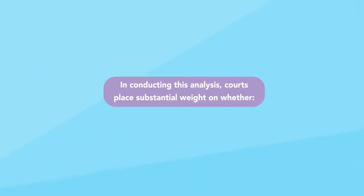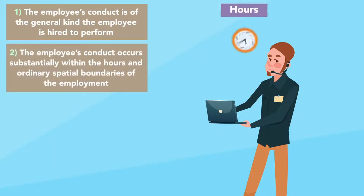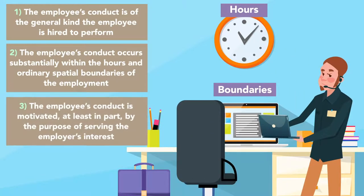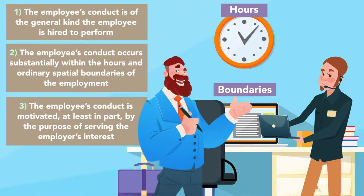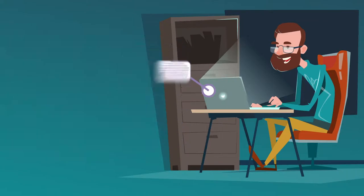In conducting this analysis, courts place substantial weight on whether: (1) the employee's conduct is of the general kind the employee was hired to perform, (2) the employee's conduct occurs substantially within the hours and ordinary spatial boundaries of the employment, and (3) the employee's conduct is motivated, at least in part, by the purpose of serving the employer's interest. Ultimately, an employee's misconduct falls within the scope of employment when such misconduct is so closely connected with what the employee is expected to do, or so fairly and reasonably incidental to it, that it constitutes the method of carrying out the employer's objective.